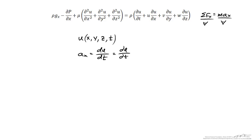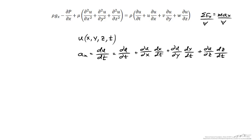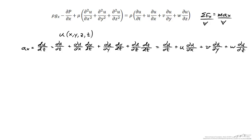Using the chain rule, I get the partial of u with respect to time, plus (∂u/∂x)(dx/dt), plus (∂u/∂y)(dy/dt), plus (∂u/∂z)(dz/dt). Using the definitions that dx/dt = u, dy/dt = v, and dz/dt = w, we are left with something that looks like the right hand side of the equation above. The first term is known as the local acceleration, and the remaining three terms are known as the convective acceleration.